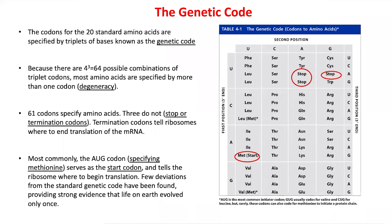Now let's move to the universal genetic code, which exists in all plants, animals, and prokaryotes. It defines the relationship between the three-letter codon on the mRNA and the amino acid it encodes. There are 64 possible combinations of triplet codons, but only 20 main amino acids in nature. The first two letters of a codon are the most important — for example, UUU and UUC both code for phenylalanine. This is the first, second, and third position of a three-letter codon.